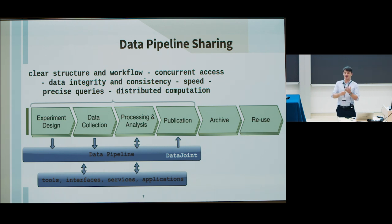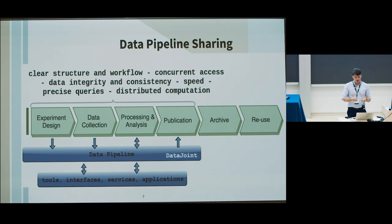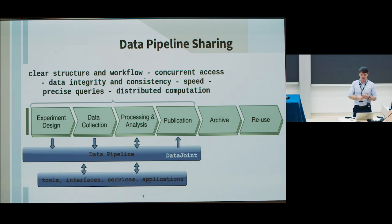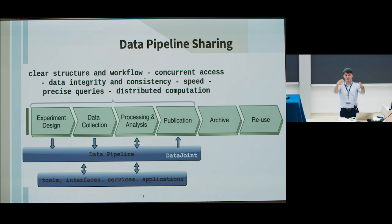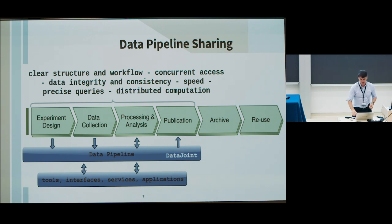For live pipeline sharing, FAIR is just the tip of the iceberg. You also need things like concurrent access, efficiency of searches, data indexed for efficient search, data integrity and consistency, speed, and precise queries. Because these are distributed teams, they need to access just the data they need without having to send entire data sets around.